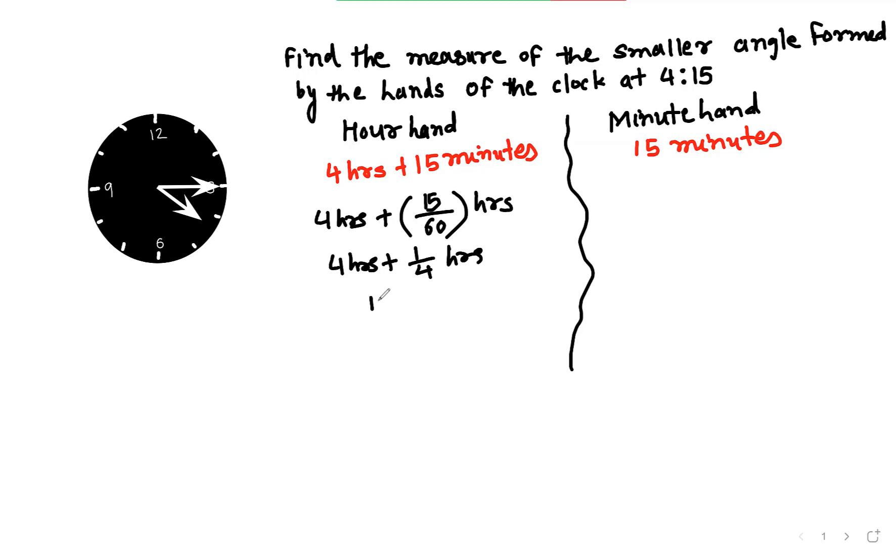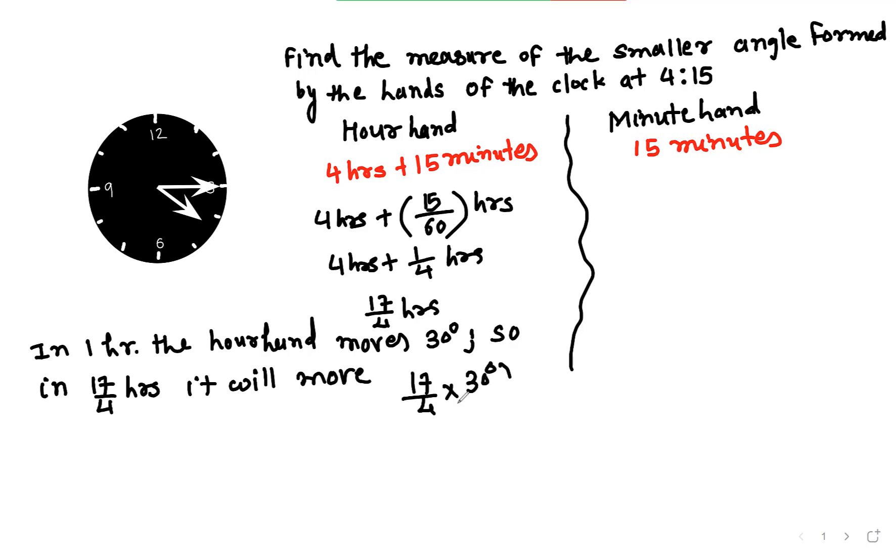In total, we get 17 over 4 hours. We know that in one hour, the hour hand moves 30 degrees. So in 17 over 4 hours, it moves 17 over 4 times 30 degrees, which equals 127.5 degrees. That angle starts from 12 and goes to here.